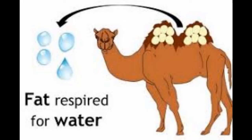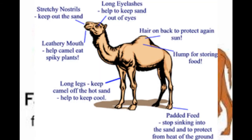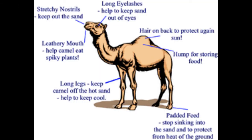A camel has a hump on its back in which food is stored in the form of fat. When food is not available, it utilizes that stored fat and can live without food for 10 days. A camel uses its entire foot while walking on the sand and has large fleshy soles which help it to move on the hot and slippery sand. Its slender snout bears a cleft upper lip, long eyelashes, and muscular nostrils which can be closed to protect the eyes from wind-blown sand.